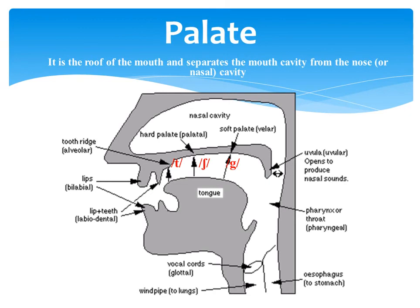If we move the tip of the tongue against the alveolar ridge — which is the place just behind the upper teeth — we can produce the sound /t/. If we move the front of the tongue against the hard palate, we can produce the sound /sh/.